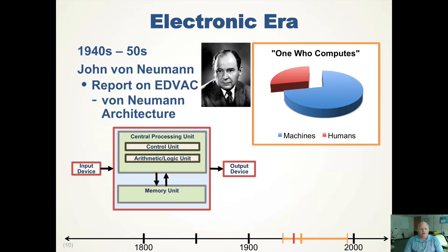Von Neumann wrote his report on the EDVAC machine and codified the von Neumann architecture: you have input, a central processing unit, a memory unit where both the stored program and the data reside, and output. The central processor accesses and is able to change the memory — somewhat similar in concept to a Turing machine. Computers are now doing more of the computation because we have these electronic devices that are able to do more of the math than we have to do ourselves.